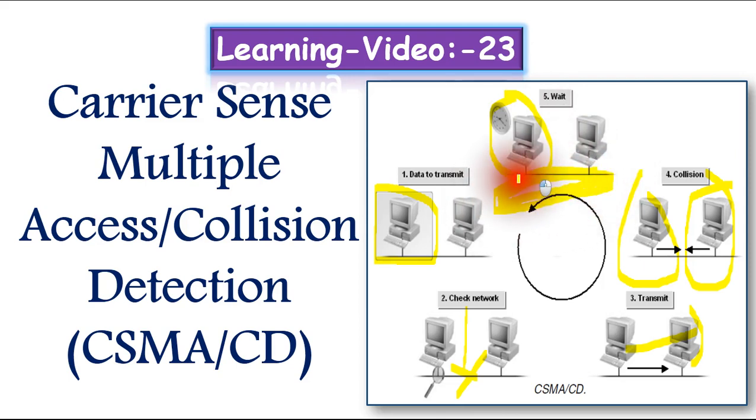once again that transmission will be repeated until the data is successfully transmitted. So this is the concept of carrier sense multiple access collision detection.